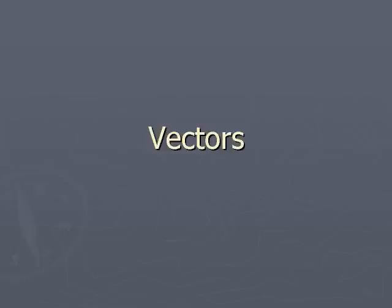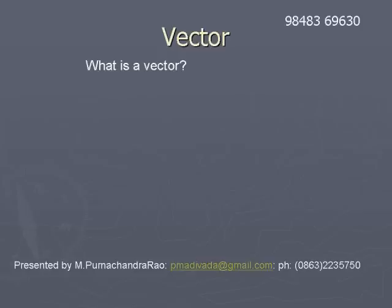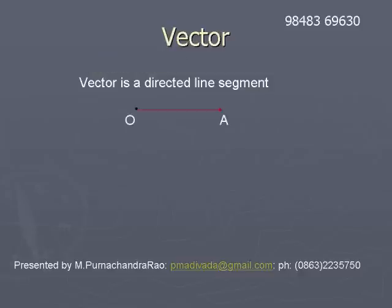Vectors. What is a vector? A vector is a directed line segment. We can define a vector as a directed line segment.